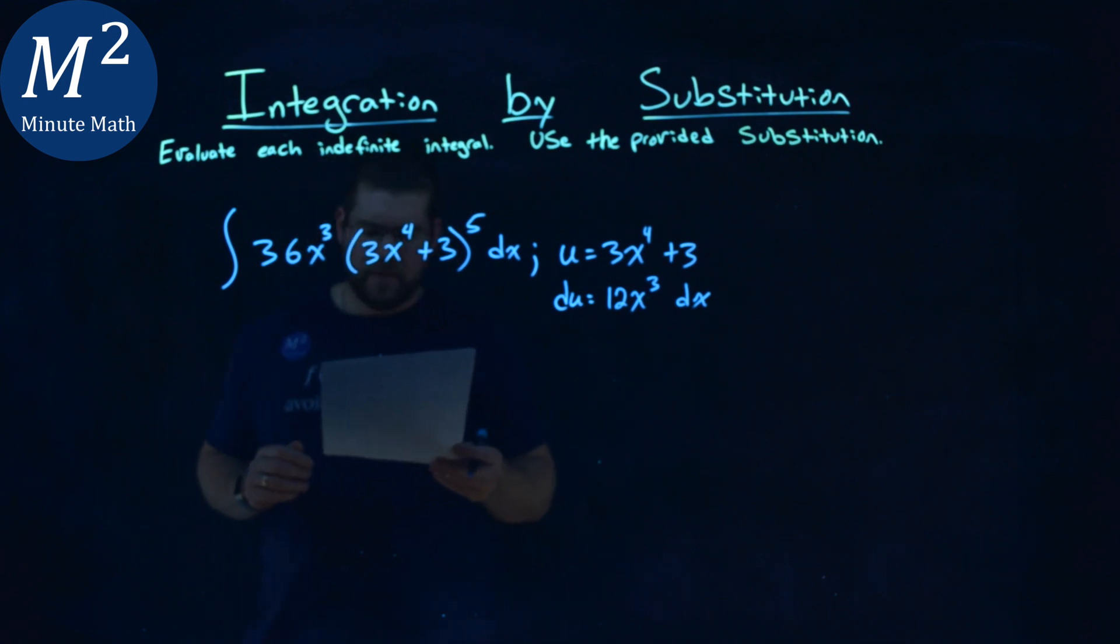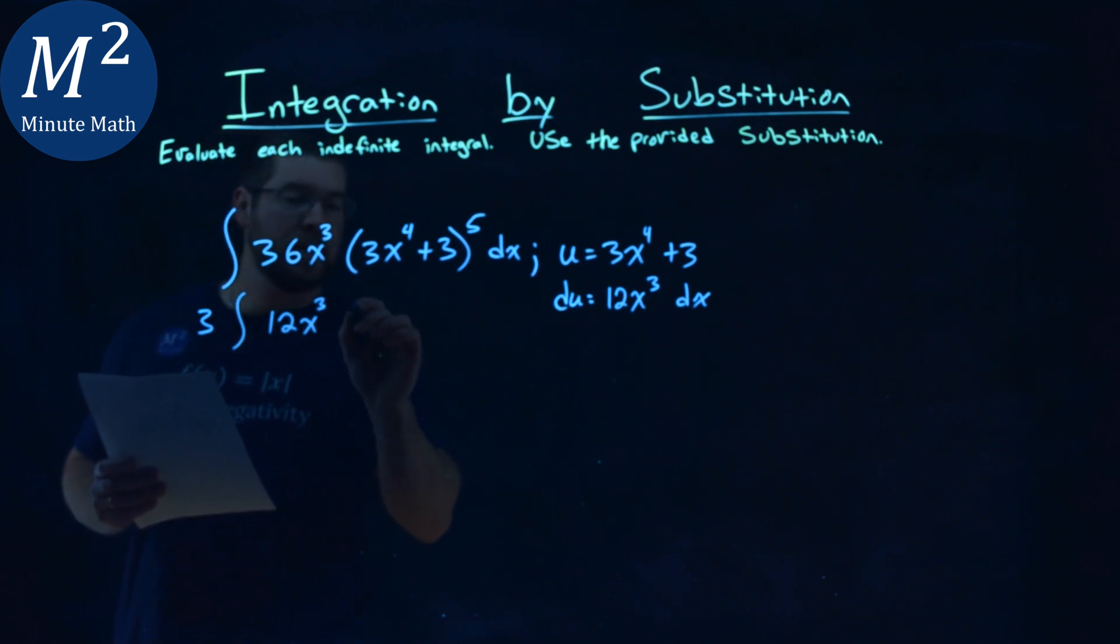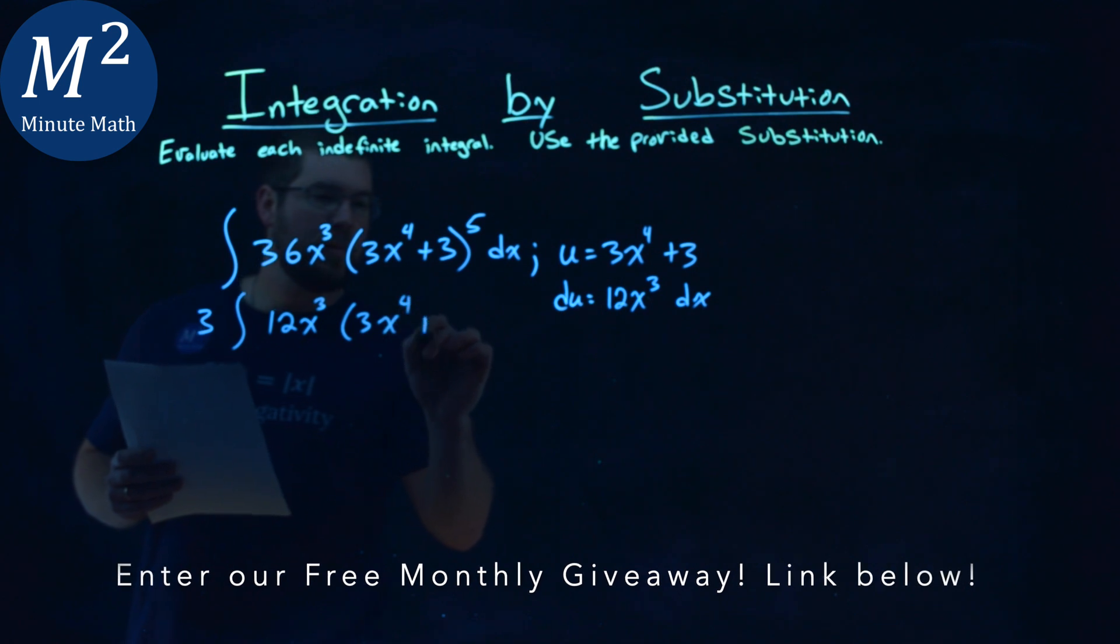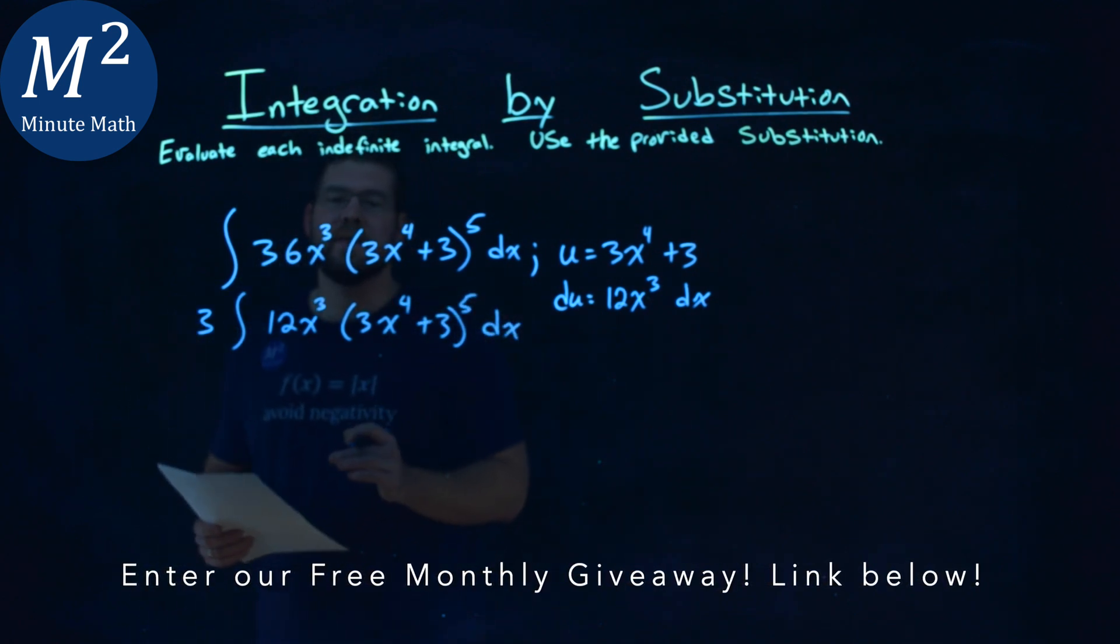Well, that 36 right there, if I pull out a 3 from the integral, I pull out a 3, I'm left with a 12x to the 3rd power, 3x to the 4th plus 3 to the 5th power dx. And we're allowed to pull out these constants.